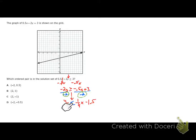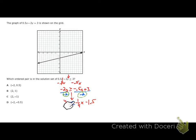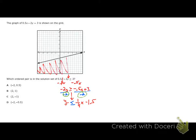So the inequality we're graphing is y ≤ (1/4)x - 1.5. They've already given us the boundary line with y-intercept -1.5 and slope 1/4, so all I have to do is the shading. We have a solid line because of the 'or equal to', and the less than symbol means we shade below. Now going through the answer choices: A at (-2, -2.5) is not in the shaded region; B at (2, 1) is also not in the shaded region.